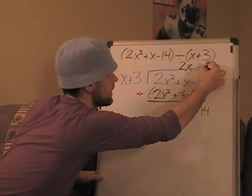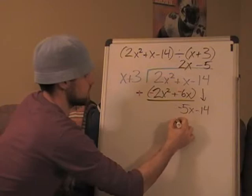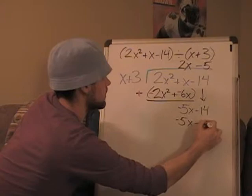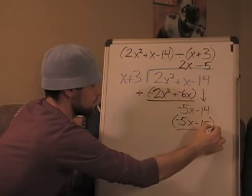So I'll just put minus 5 up there, negative 5 times x, negative 5x. Easy. Negative 5 times 3, well let's see, that's negative 15. Looks like we're going to have some leftovers here.